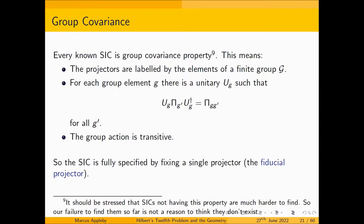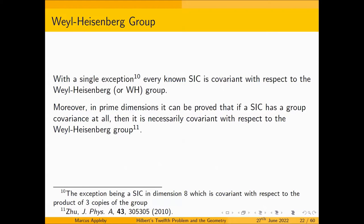Every known SIC has a group covariance property, which means the projectors are labeled by the elements of a finite group, and for each group element there's a unitary U_G such that conjugating Π_{G'} with U_G gives Π_{GG'}. The group action is transitive, meaning you can get every SIC projector from any one of them by conjugating with the unitaries corresponding to the group. With a single exception — the Hoggar lines in dimension eight — every known SIC is covariant with respect to the Weyl-Heisenberg group. In prime dimensions, it can actually be proved that if a SIC has any group covariance at all, it's necessarily covariant with respect to the Weyl-Heisenberg group.